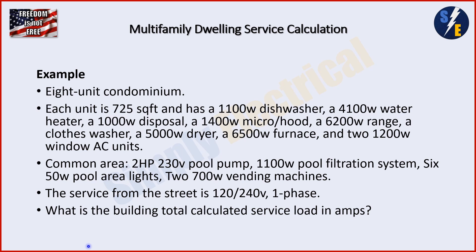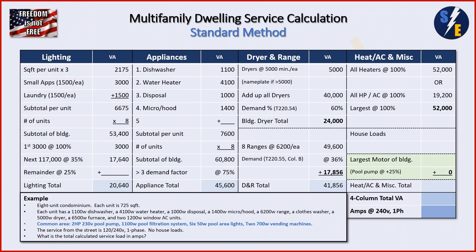Here is our example: we have an eight-unit condominium with a common area that has some house loads listed out. I'm going to start with the standard method first to show you how it works, which is really straightforward. Then we're going to go to the optional method and show you the difference between the two methods and how house loads are added. It's pretty much the same thing, but it looks a little different because they are different tables. Here's the multifamily standard method table — I won't go through it in full detail, but I do have another video on that. We get our column totals at the bottom, and in the last column we have a section called house loads, where we put our total for house loads and add it into our calculation to get our total building service.